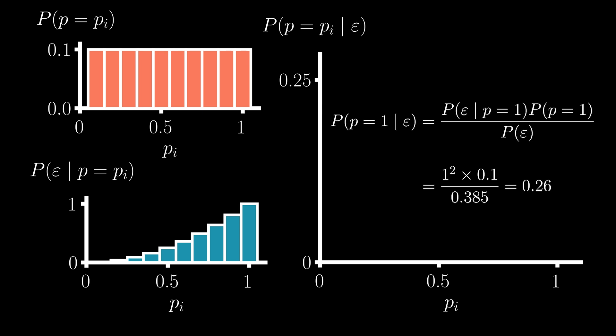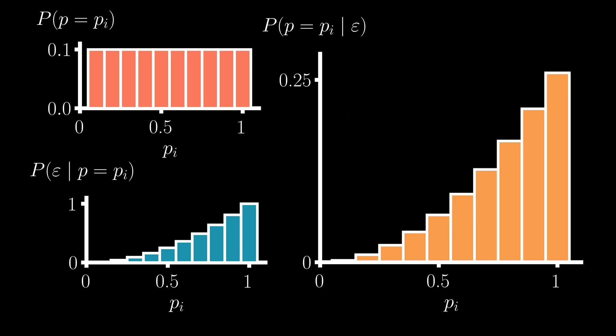We can now do the same calculation for each possible value for p, leading to the following posterior distribution.